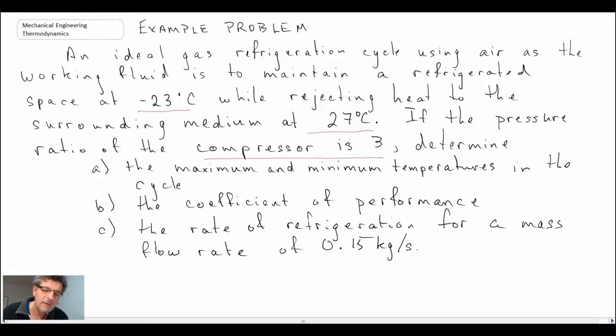What they want us to determine is the maximum and minimum temperatures in the cycle, the coefficient of performance, and the rate of refrigeration—the amount of cooling or heat transfer that we actually have—knowing a mass flow rate of 0.15 kilograms per second.